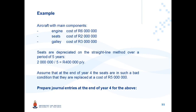Let's look at an example. We have an aircraft with main components: an engine with a cost of 6 million, seats with a cost of 2 million, and a galley with a cost of 3 million — all separate components. The seats are depreciated on the straight-line method over a period of 5 years, giving depreciation of 400,000 per year. Assume that at the end of year 4, the seats are in such a bad condition that they have to be replaced at a cost of 5 million.